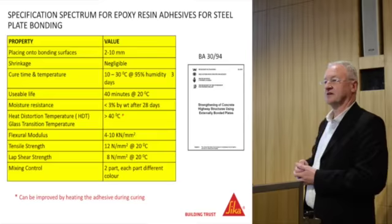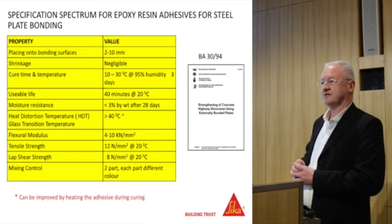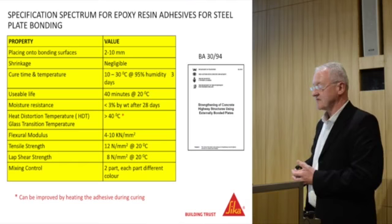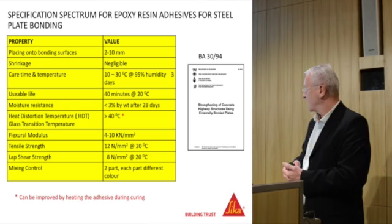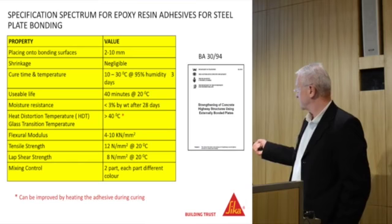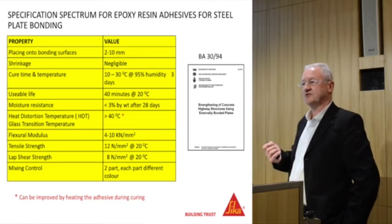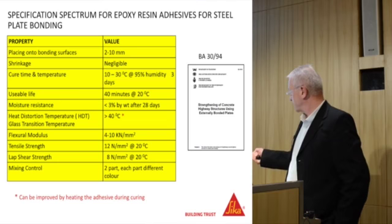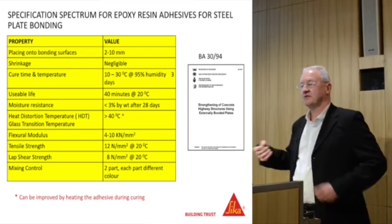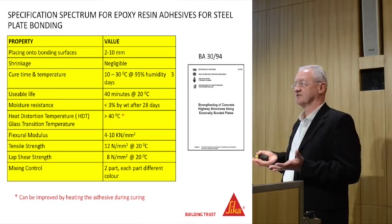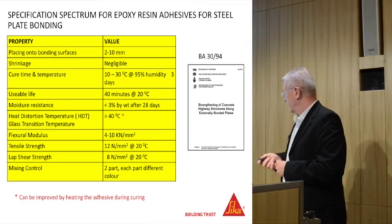Not all epoxy types are the same, so Professor Mays compiled what's called a specification spectrum for epoxy adhesives specifically for steel plate bonding for the TRL. The properties considered included: bond line thickness of 2–10 mm for gap filling, negligible shrinkage so the epoxy doesn't pull away from the plates, cure time and temperature within a certain range, and a usable life of at least 40 minutes — which goes very quickly when you're mixing, applying and positioning plates. Moisture resistance was set at less than 3%, and our epoxy achieved less than 1%.